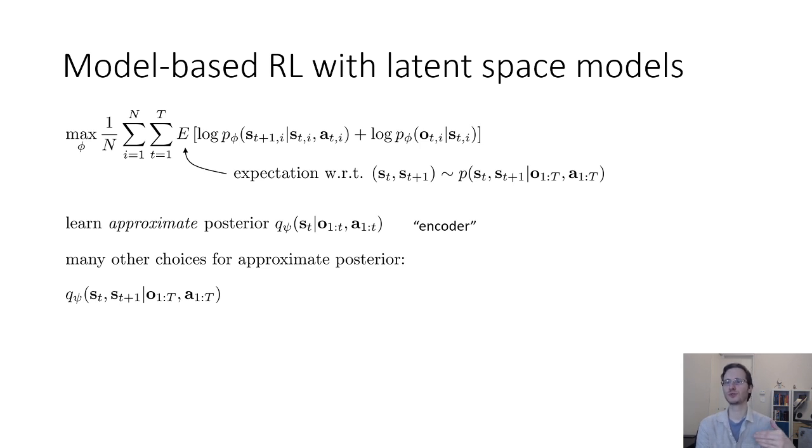And the approximate posterior will be another neural network that gives us a distribution over st given the observations and actions seen so far. And there are a few choices that you can make. So, we call this approximate posterior the encoder and you can learn a variety of different kinds of posteriors. Which one you pick will have some effect on how well your algorithm works. So, you could learn a full smoothing posterior. You could learn a neural net that gives you q psi of st comma st plus 1 given O1 through capital T comma A1 through capital T. So, this posterior gives you exactly the quantity you want. It's the most powerful posterior you could ask for, but it's also the hardest to learn. On the other extreme, you could imagine a very simple posterior that just tries to guess the current state given the current observation. For example, if the partial observability effects are minimal.